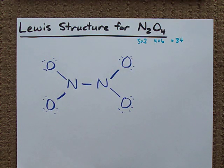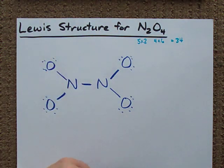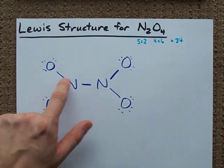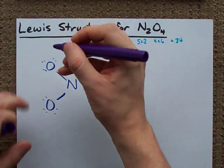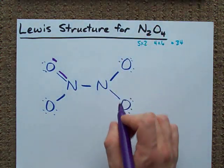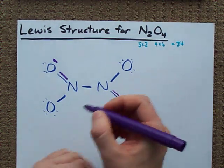We need to make sure now that every atom has its own stable octet. This N only has 2, 4, 6 electrons around it. I'm going to move these two into a double bond. This nitrogen only has 6 around it. I'm going to take these two and move them into a double bond.